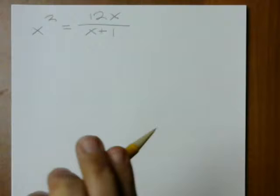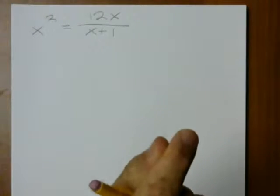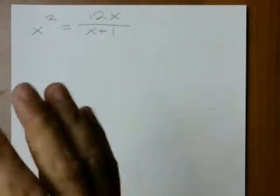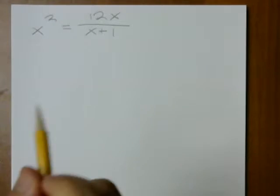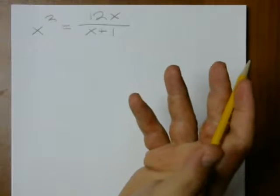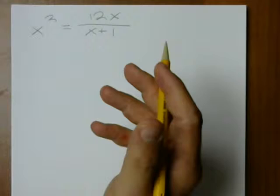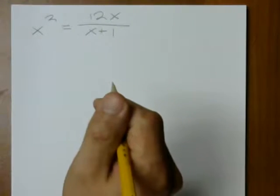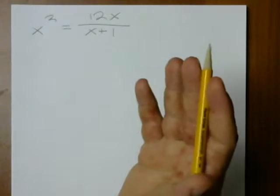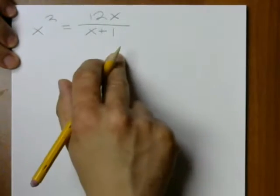It's a bad idea. We don't want to divide by anything with a variable in it because that might erase one of the solutions, which is more dangerous than creating a fake solution. If you create an extra solution that doesn't really work, you can always just plug it back into the beginning and check. If you erase the solution while you're solving, you kind of get stuck and you might not see that solution ever.